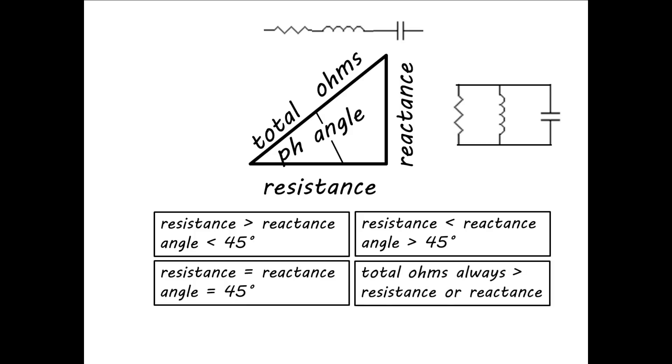The total ohms of impedance will always be larger than the resistive impedance, and it will also always be larger than the reactive impedance. And finally, if you have a negative reactance, that means you're going to have a negative phase angle.